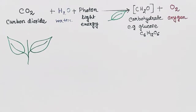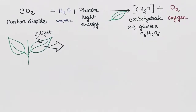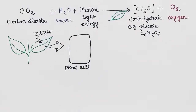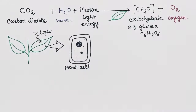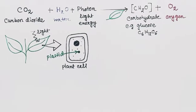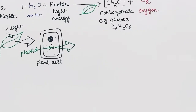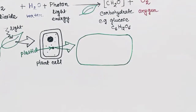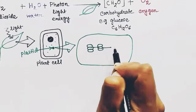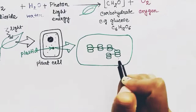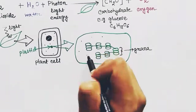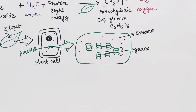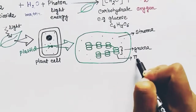Light is coming to the leaves. Now we will zoom into the leaf — this is one plant cell having a nucleus and cell organelles. This is the plastid where photosynthesis occurs. Zooming into the plastid, this is one plastid. It has some disc-like structures arranged in a row. This total structure is called grana, and the fluid surrounding it is stroma. Each of the discs is a thylakoid.